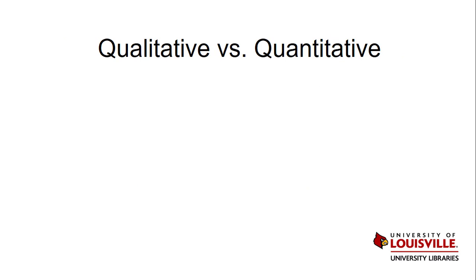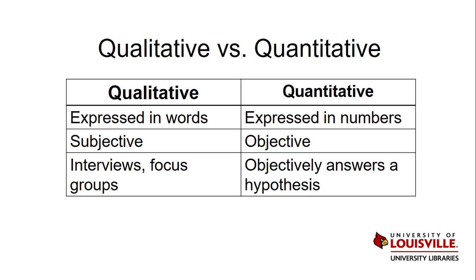When looking at research literature, it is important to be able to understand whether the research is qualitative or quantitative. Qualitative research is descriptive research. It is information expressed in words, as opposed to numbers, and is subjective because it deals with personal reactions, opinions, and viewpoints of the subjects involved in the study. Data for qualitative research can be collected via interviews or focus groups.